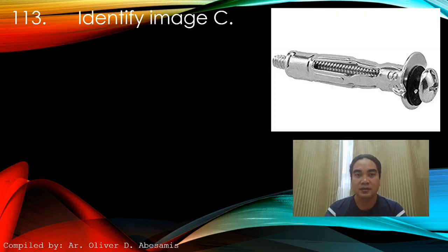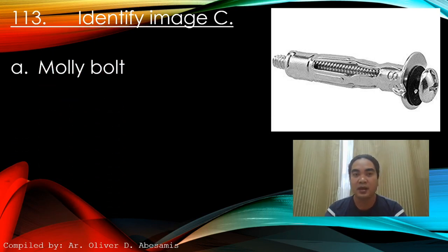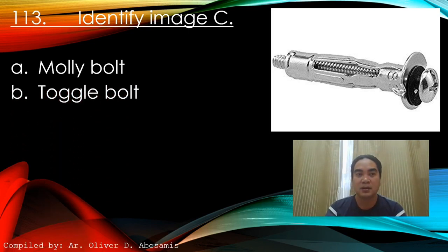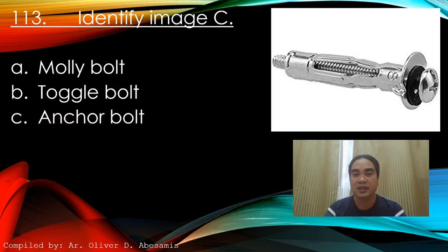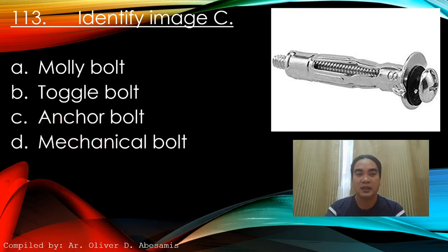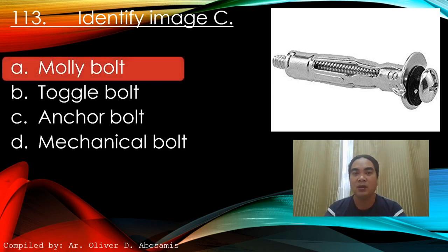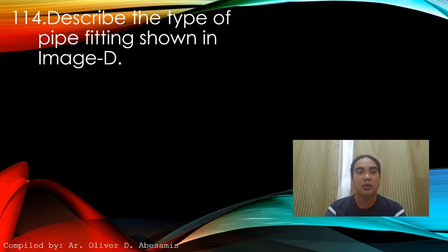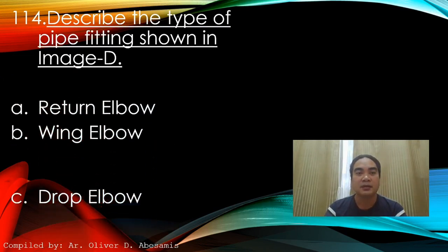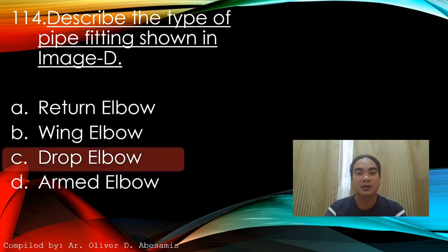Question 113: Identify the image. A) Molly bolt, B) Toggle bolt, C) Anchor bolt, D) Mechanical bolt. Answer: A) Molly bolt. Question 114: Sorry, image is not available.